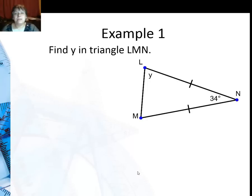Now in this example we're going to go ahead and find Y, and all I told you is that this is an isosceles triangle with an angle of 34 degrees. I know these two legs are congruent, so the base angles are angle L and M.